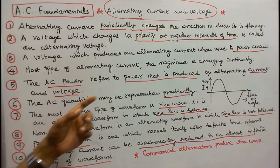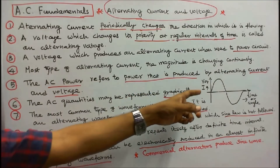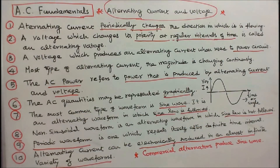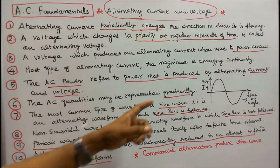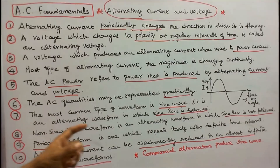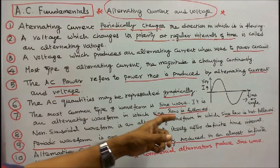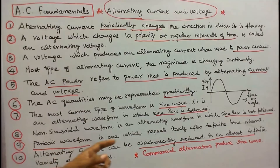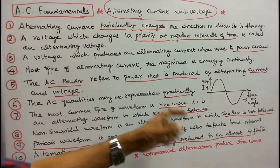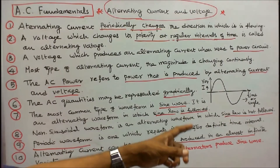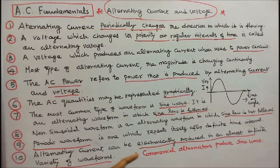The AC quantities may be represented graphically. Here this is a graph — the X axis is time or angle, and the Y axis is magnitude of voltage or current. The most common type of waveform is the sine wave; it is an alternating waveform in which the sine law is followed. A non-sinusoidal waveform is one in which the sine law is not followed. A sine wave is a periodic waveform — one which repeats itself after a definite time interval. Alternating current can be produced in an almost infinite variety of waveforms, but commercial alternators produce sine waves.